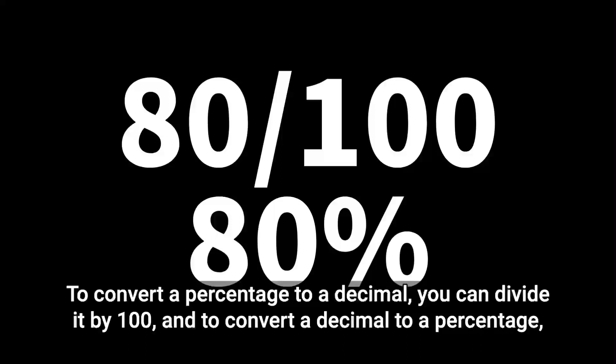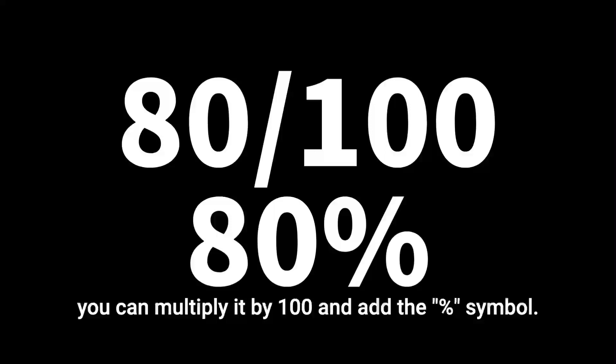To convert a percentage to a decimal, you can divide it by one hundred. And to convert a decimal to a percentage, you can multiply it by one hundred and add the percent symbol.